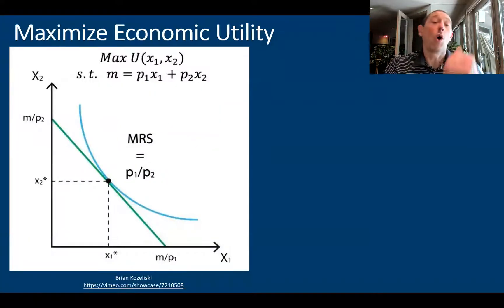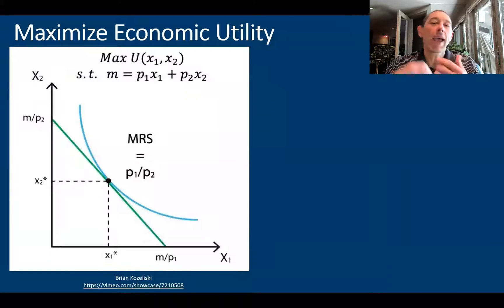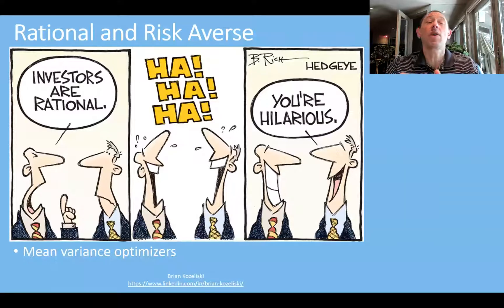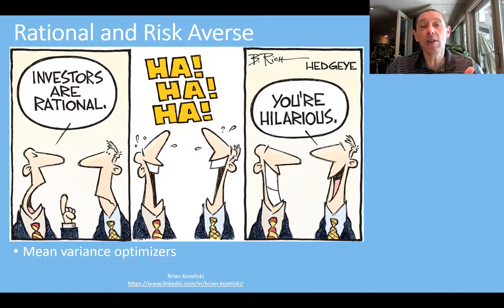Every investor out there only wants to maximize their economic utility. They don't care about anything else — there's no emotions involved, no good feelings, no 'I like this stock.' It's all about maximizing utility. All investors are rational and risk-averse. Specifically, they are mean-variance optimizers, both in terms of their utility maximization and their rational thinking.